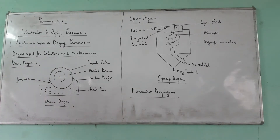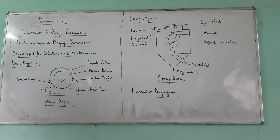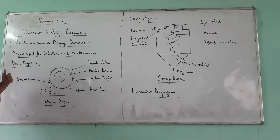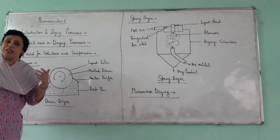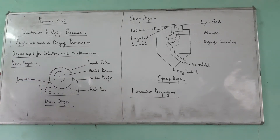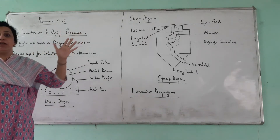It is clear that we have solution form and suspension form, and we also have solid form. That is why we have special types of dryers. Because the material is liquid, it spreads over a large surface area, which means drying can be fast. For this purpose, we use two main dryers: first is drum dry and second is spray dry.